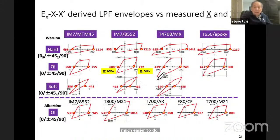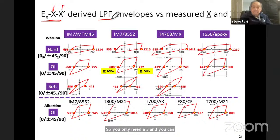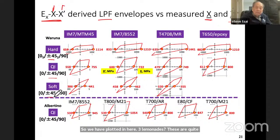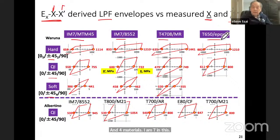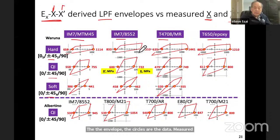There are only three parameters you need to know: the longitudinal stiffness (E_x), the longitudinal tension (X), and the longitudinal compression (X prime). You can derive all the last ply failure predictions from these three. We have plotted three quad laminates — hard, quasi-isotropic, and soft — and four materials (IM7, master, T650). Red is the failure prediction (omni-envelope) and the circles are measured data. You can see that they are very consistent.